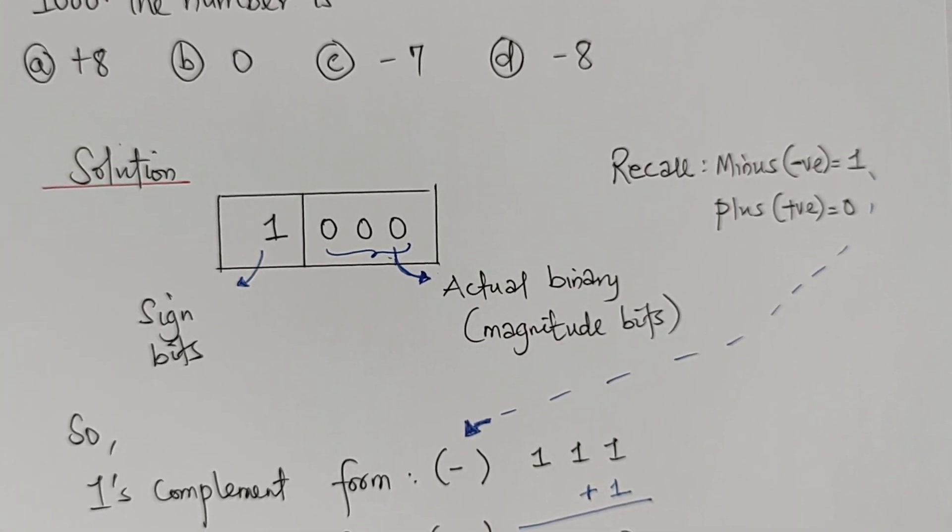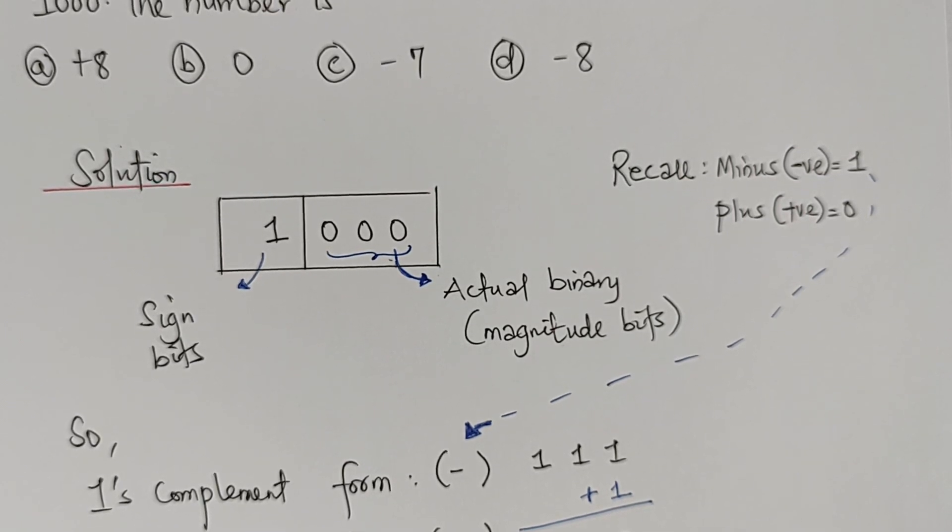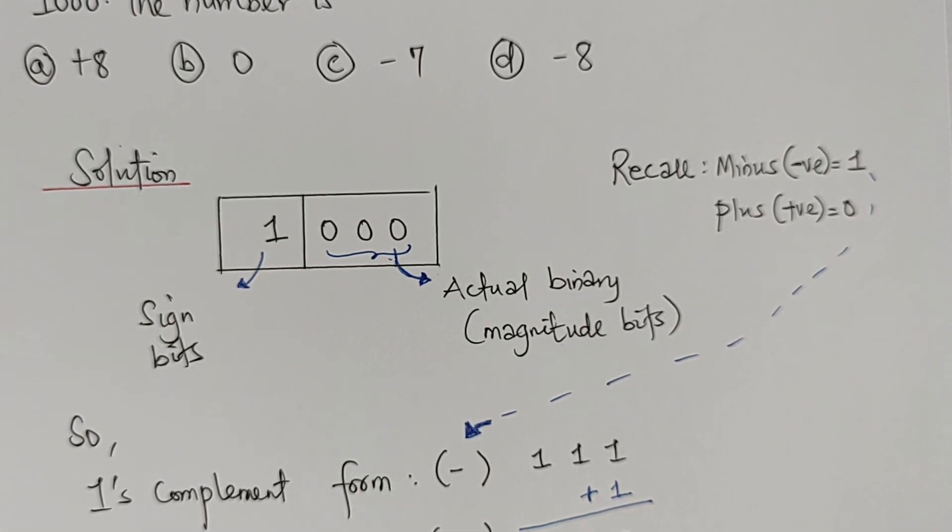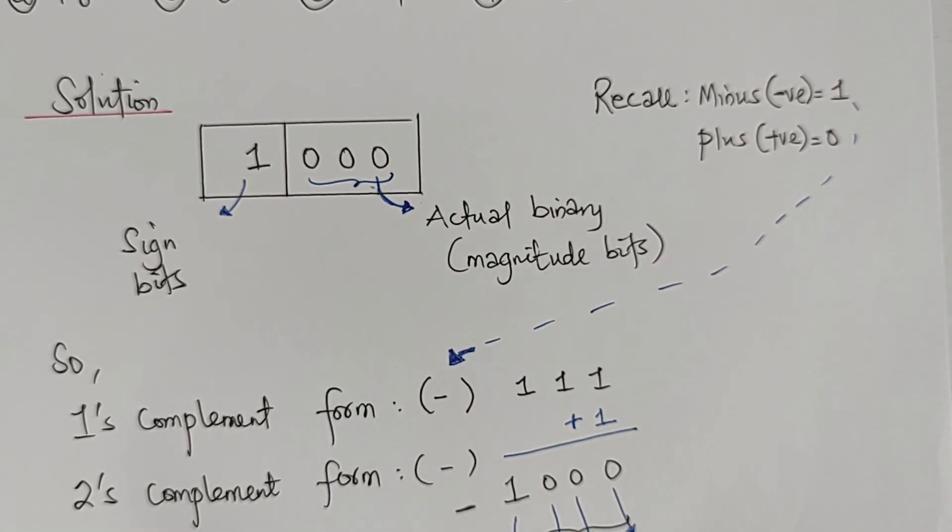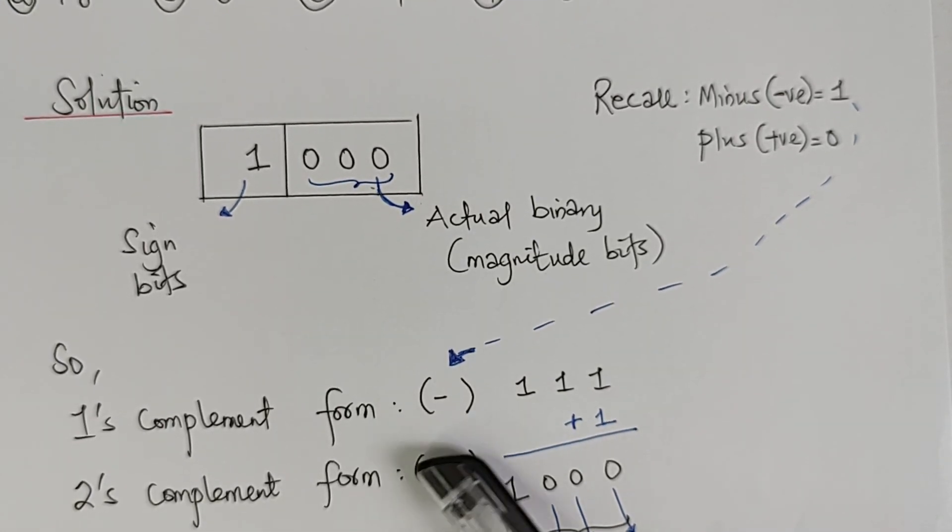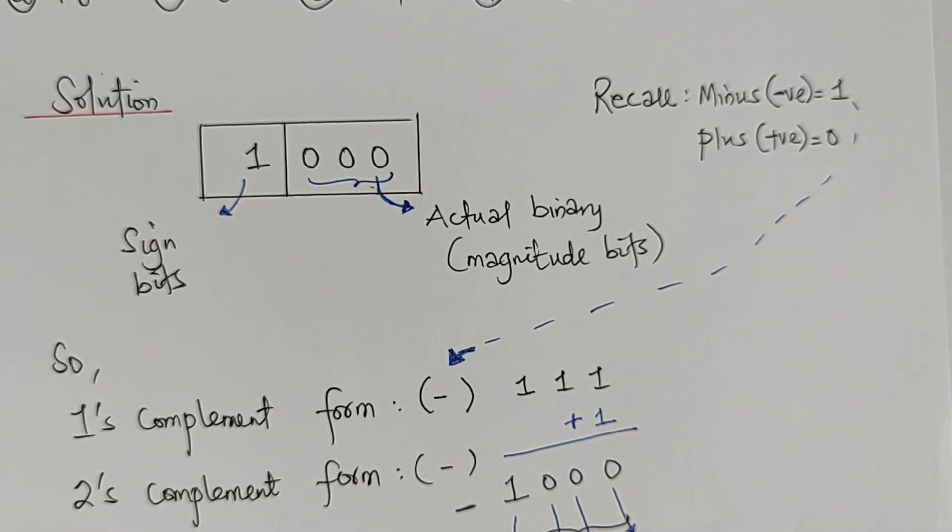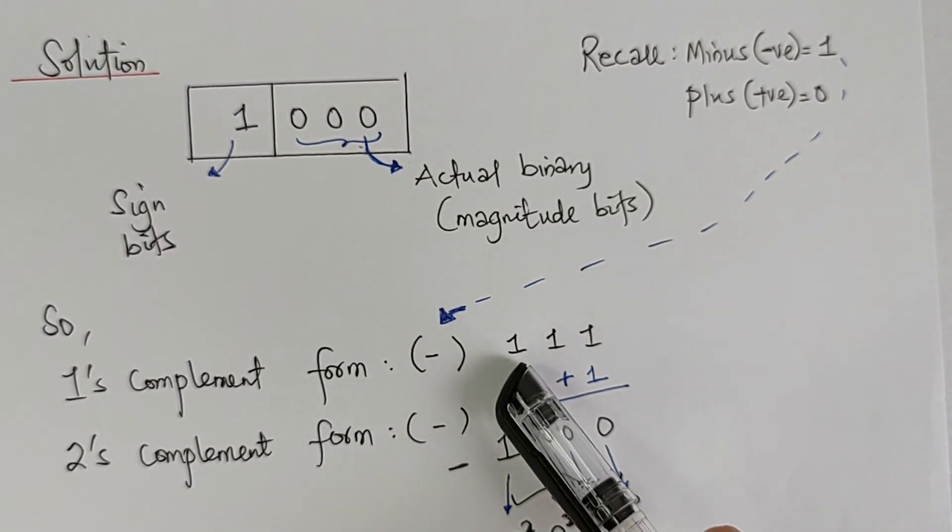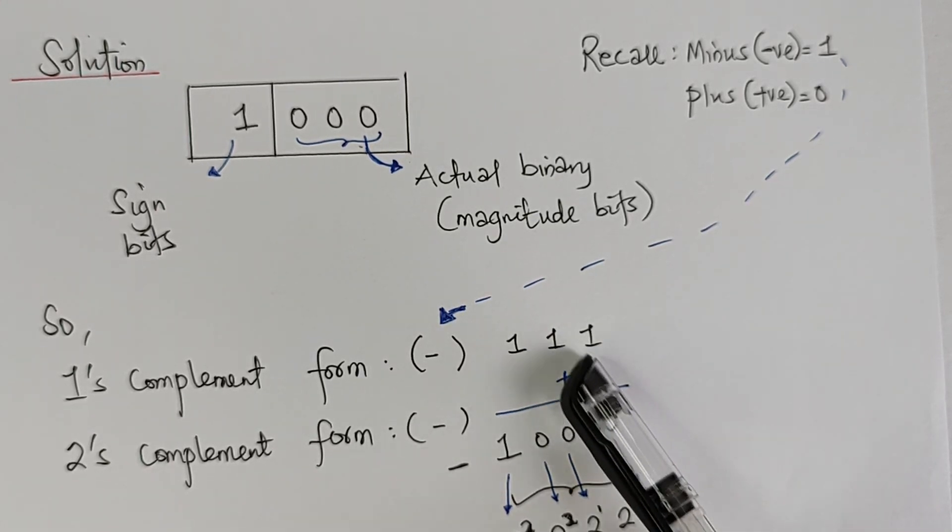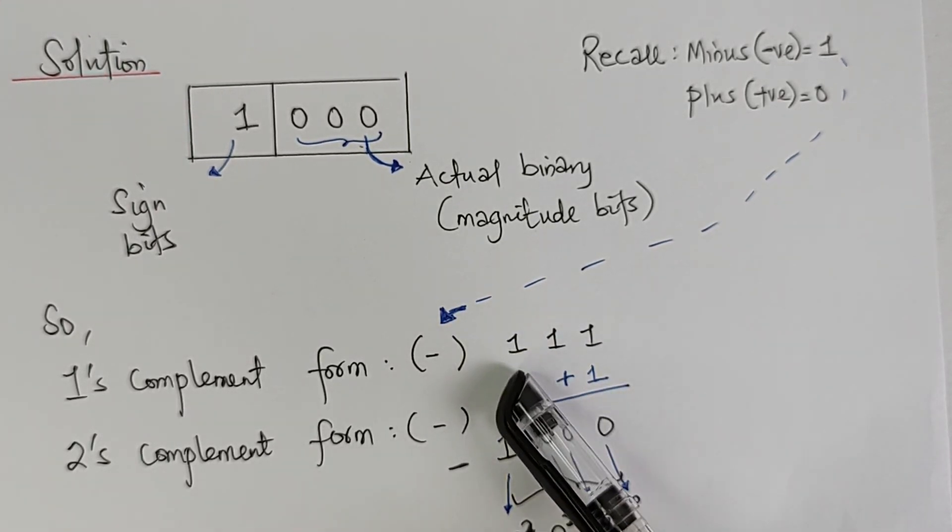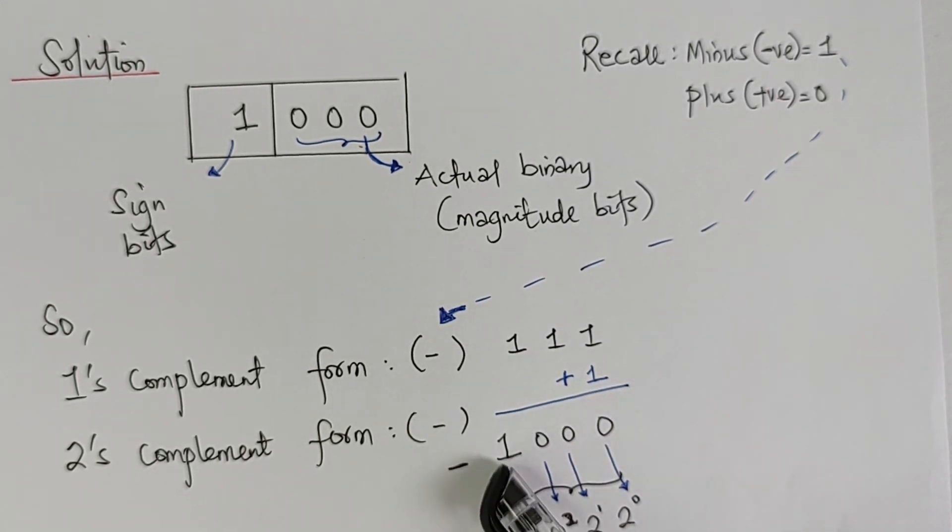Now, how do we get the second complement? The second complement is just a summation of the first complement and 1. That means we're going to have first complement plus 1. For our first complement, we have minus 111, plus 1. Take note that when you're working on the second complement, it doesn't affect the sign bit. So we're just going to have 111 plus 1. When we do that, we're going to have 1 plus 1, 0. Take over 1 plus 1, 0. I will take the 1 there. 1 plus 1 will be 0, and here will be 1.